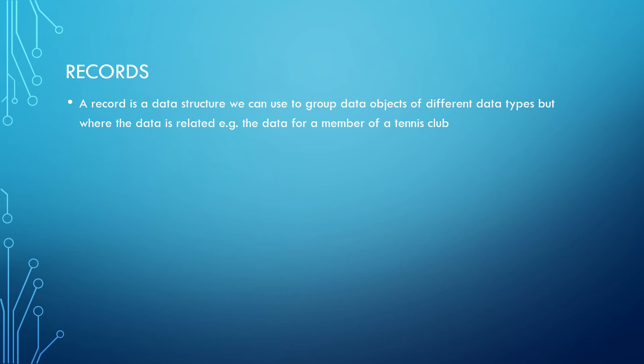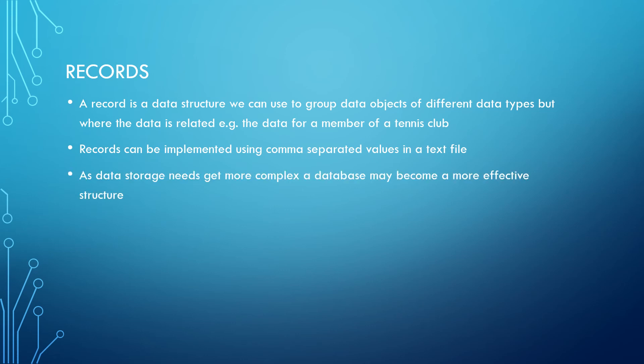As we just heard, we could use a Python list to store a record. A more common practice is for a record to be stored on a text file with one record per line and the values separated by commas. This is known as comma-separated values. As data storage needs become more complex, a database may become more effective than trying to use text files.